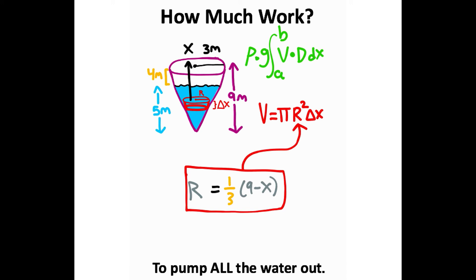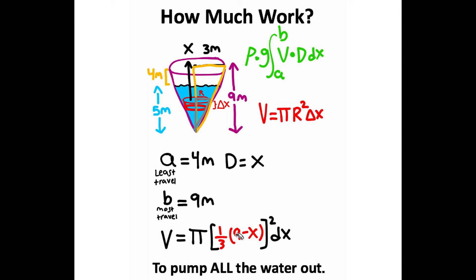Now we can take this and plug it back in for our radius r in this expression, and we get this equation for volume. If I square this fraction, which becomes 1 over 9, since 1 times 1 is 1, and then bring this pi into the expression, I get this equation total.